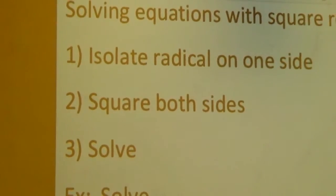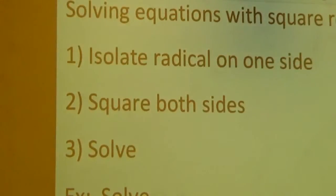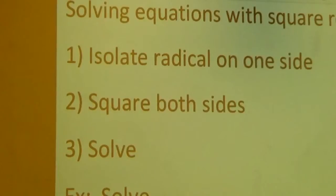First thing first — to solve these, anytime I put steps up here they are general steps. Even though it looks like there are three steps, you may have to do an extra move inside that step. Isolating the radical on one side may take more than one move. Squaring both sides is indeed one step — I can only square both sides once. Then solving is just solving for x after that, back to equations like 4x plus 5 equals 7 — those multi-step equations we've seen before.